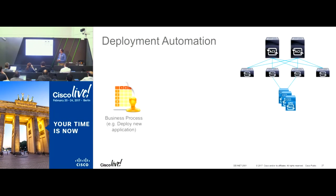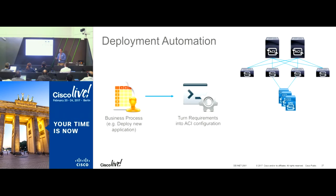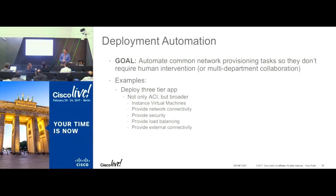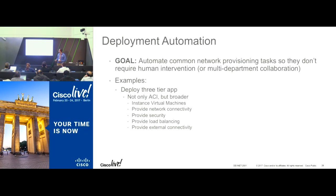The first use case is deployment — deploying new applications and turning requirements into configuration. You might need to create 10 tenants, new application profiles, or EPGs manually, but you can automate all of that with a deployment script. Creating objects like EPGs, BDs, and tenants becomes a single click. Doing this manually might take a couple of hours because you need to click through everything. With a Python script or toolkit, it becomes just a click.